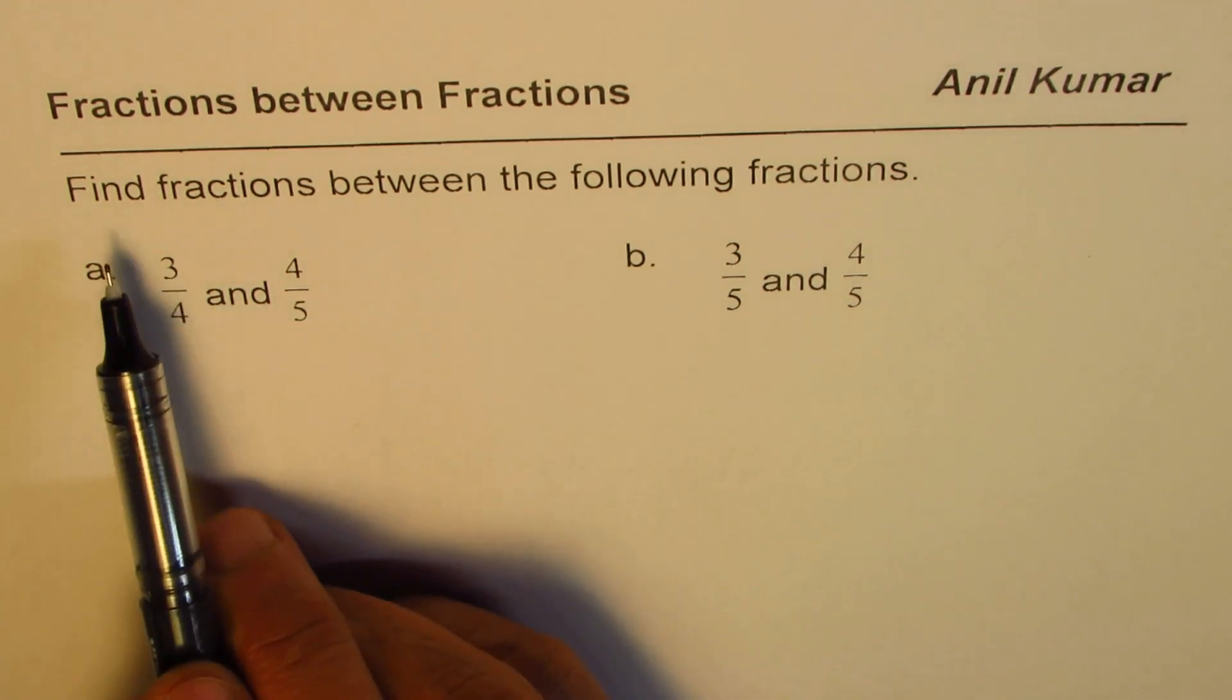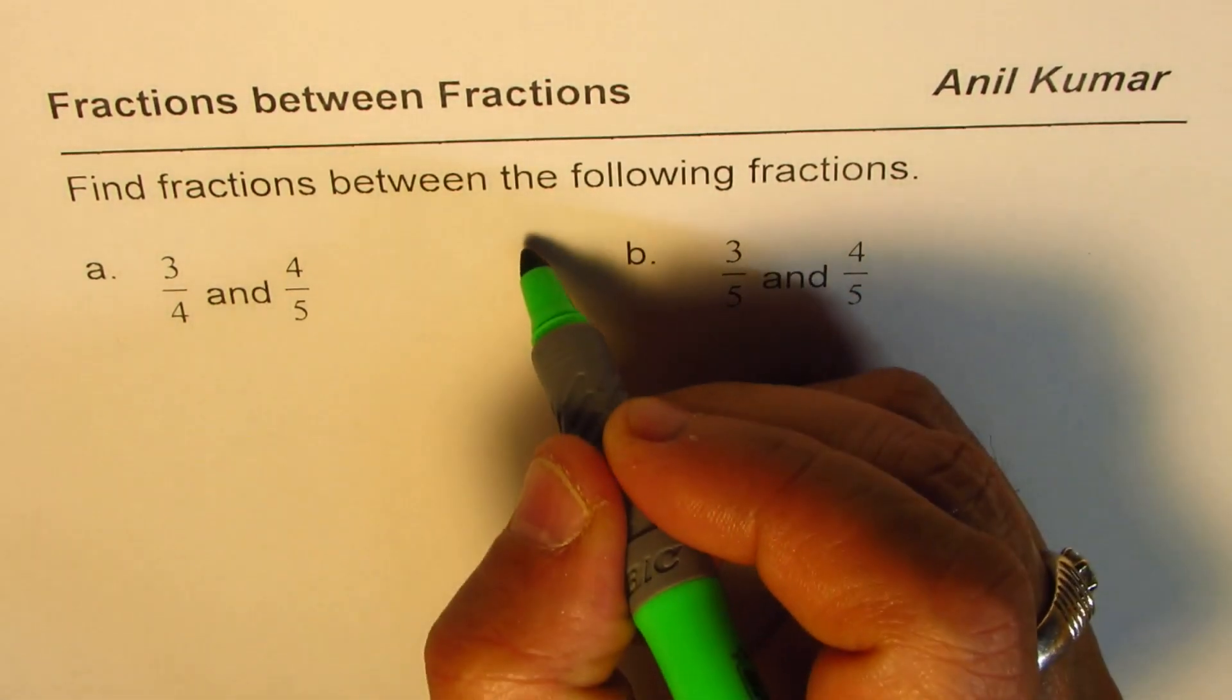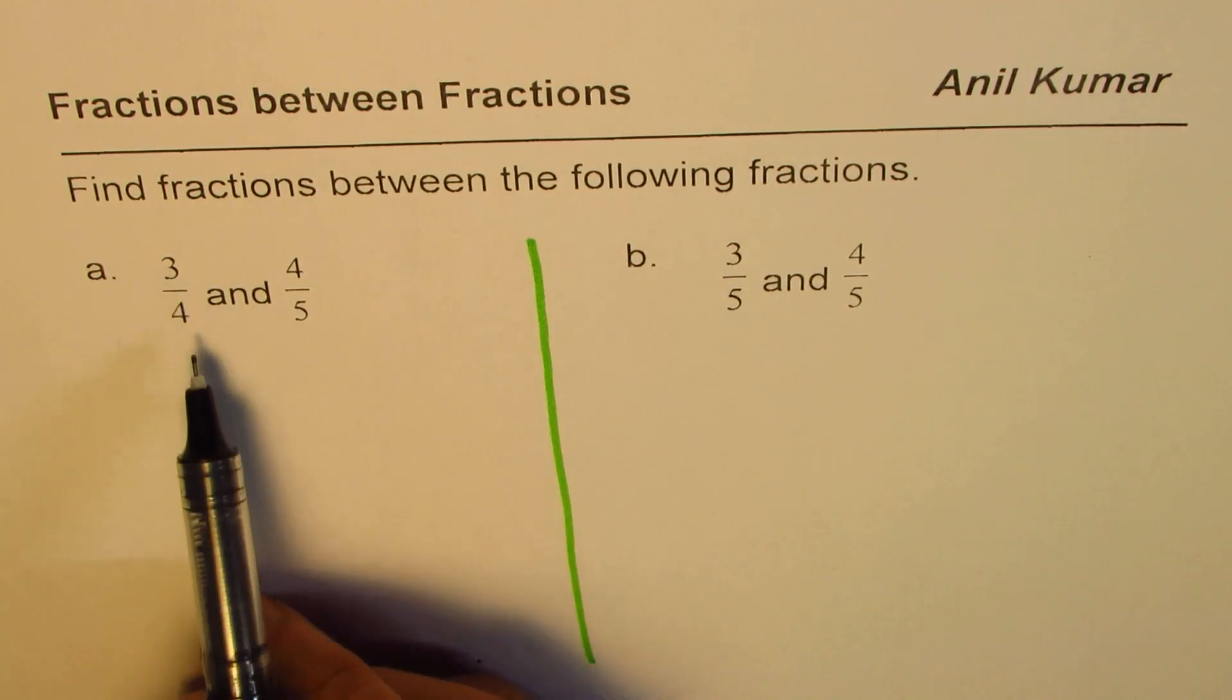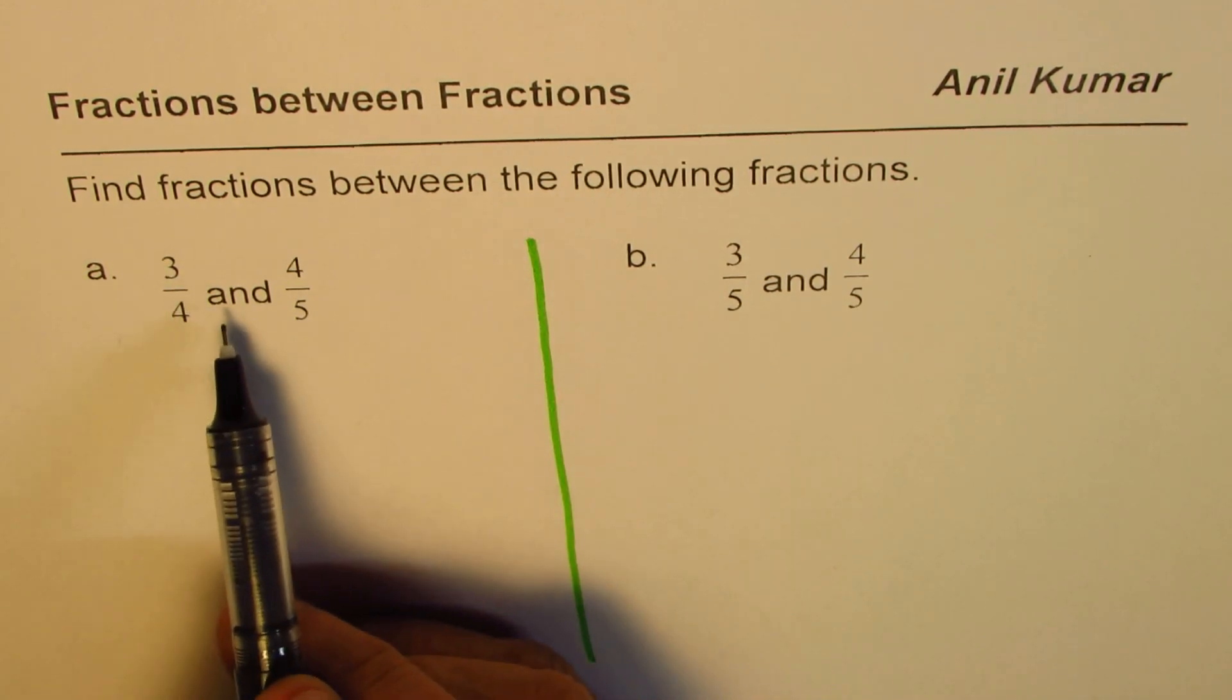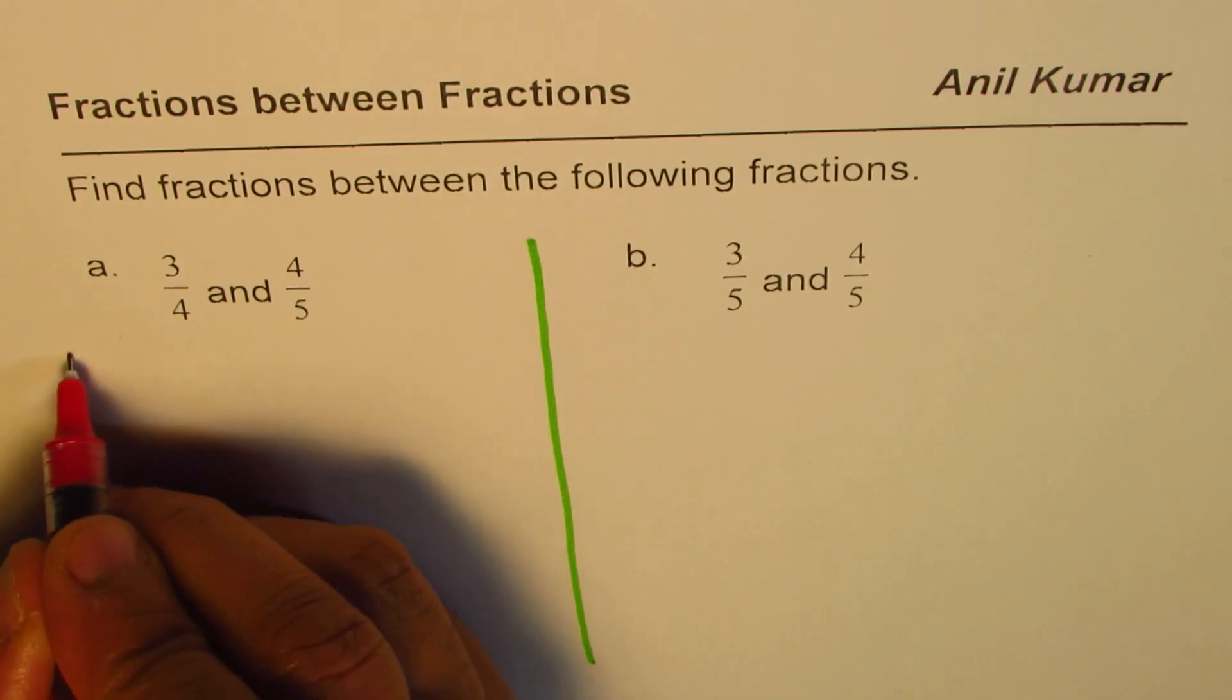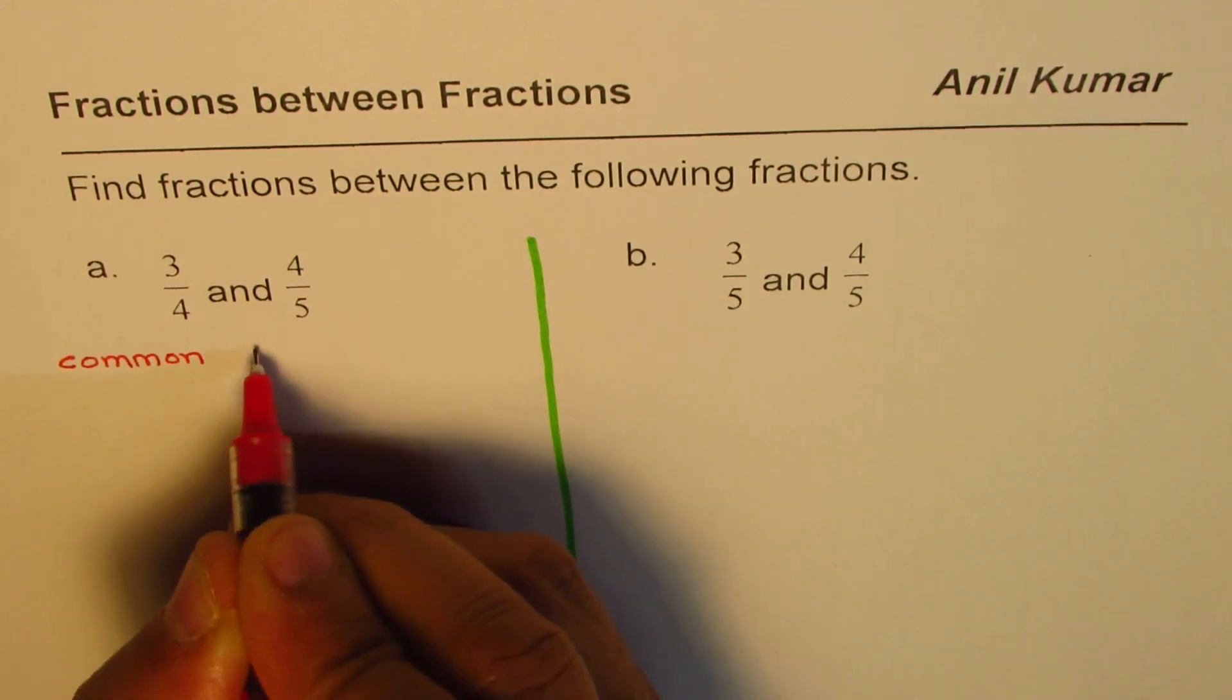So the question here is find fractions between the following fractions. We'll do two questions which seem difficult but they are not so difficult. Let us see how to make them very simple. The first one is 3 over 4 and 4 out of 5. Now the idea is always when you work with fractions you should have common denominator. So that is key. We should have common denominator.